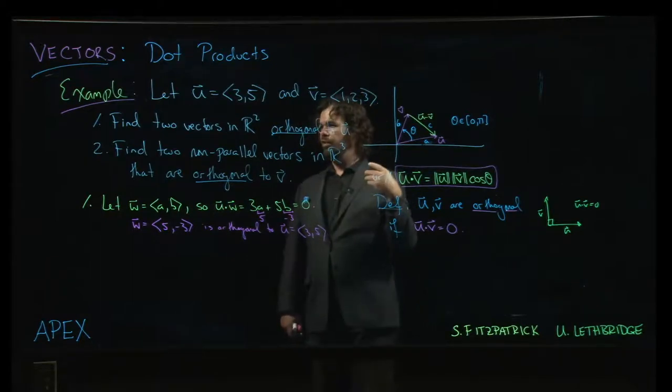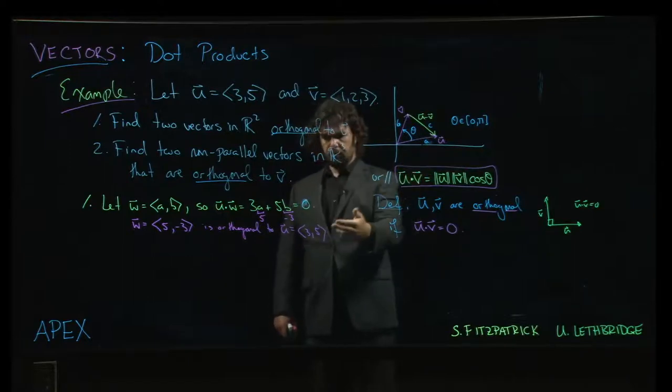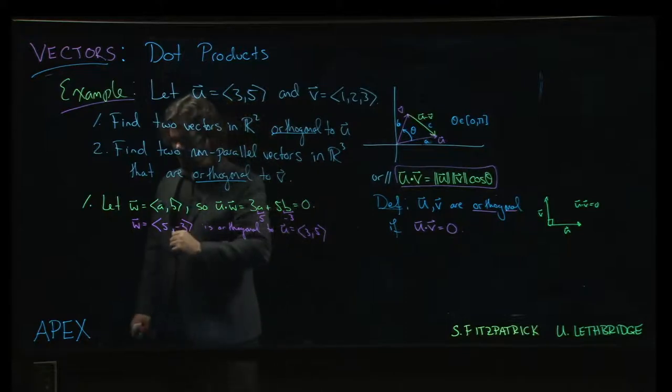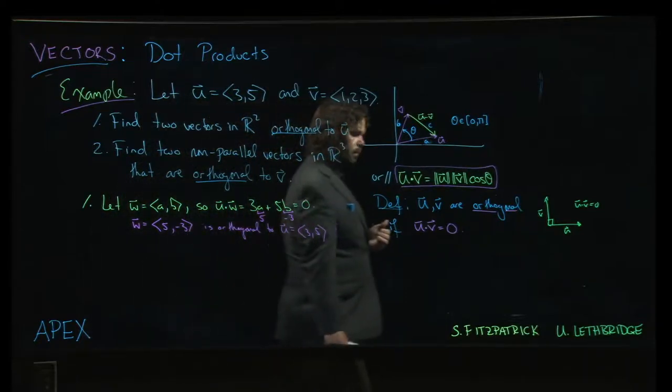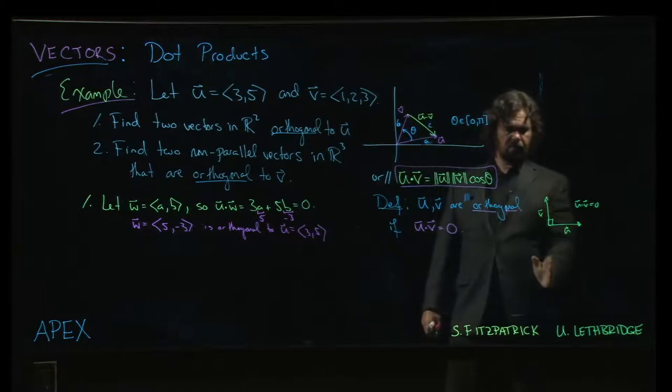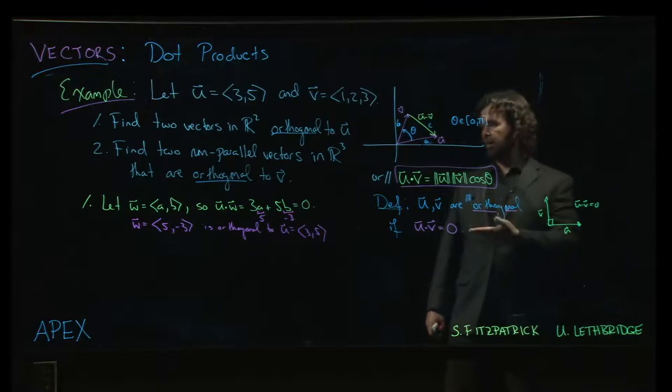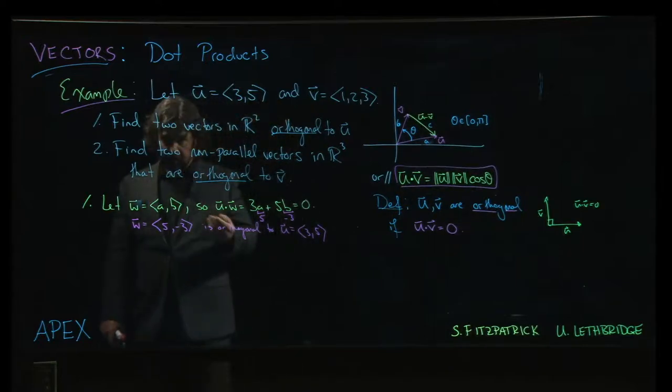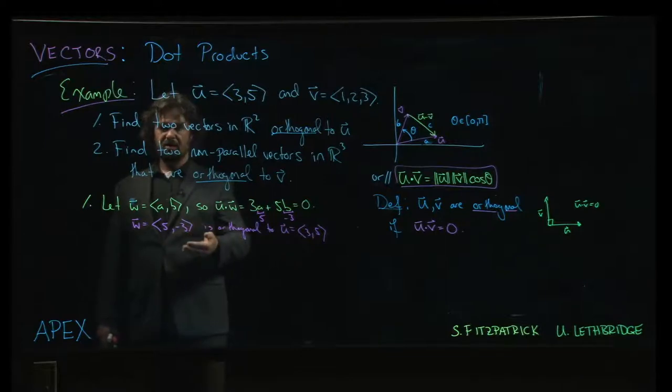The first question does say to find two vectors that are orthogonal to this given vector, but if you think about it there's actually not that much freedom. Once I've specified a vector in the plane, there's kind of this one direction that's perpendicular. I could rescale, so I could take my second vector to be any scalar multiple of this vector. I could take for example (10, -6) or I could take (-5, 3).